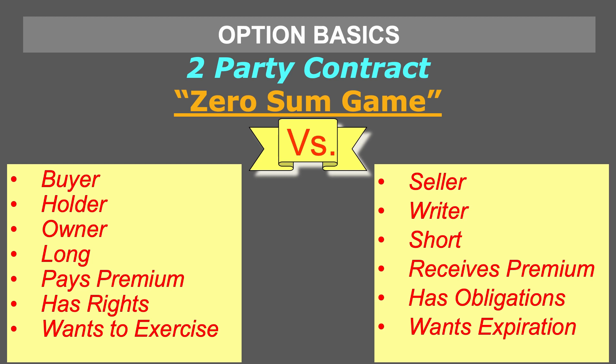The buyer of the contract pays a premium to the seller and acquires a right. The seller receives the premium and because they receive the premium, they take on an obligation. So a buyer of an option contract has a right and the seller has an obligation. The buyer wants to exercise their right and the seller wants their obligation to expire.